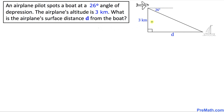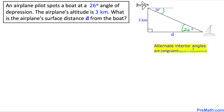Let's go ahead and look at this visual representation. Over here you can see that this angle of depression is 26 degrees. Then we know that this angle is also going to be 26 degrees because they are alternate interior angles, and we know that alternate interior angles are congruent. Congruent means they are equal in measurement.